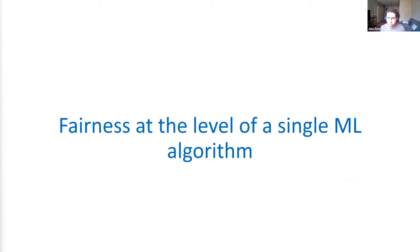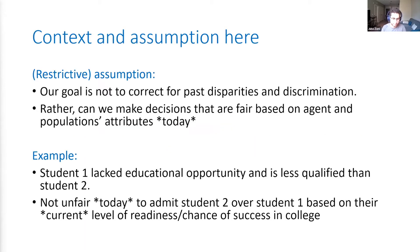Right now, because algorithms play such an important role in society and can be a major source of unfairness, I want to focus on fairness and unfairness at the level of a single machine learning algorithm. To do that, I'm going to start with a very restrictive assumption. Our goal right now is not to correct past disparities or past discrimination — rather, I want this algorithm to make decisions that are fair today, based on populations and agents' attributes right now.